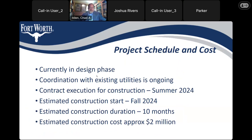This is the project schedule and cost. We're currently in design between 60 and 90%, coordinating with existing utilities for relocation. We expect to execute the construction contract next summer — summer of 2024 — and then 4 to 5 months after that in the fall, we'll start construction. So about this time next year we'll be starting construction. We expect construction to take about 10 months, and the construction cost is approximately 2 million dollars.